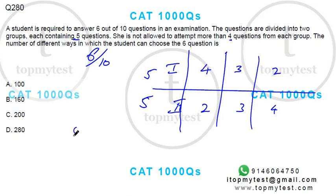The first one would be 5C4 into 5C2, which will be the same as this one. Only thing is it's the other way round. So we can just multiply by 2. Or you can do 5C3 into 5C3. This will be your answer.